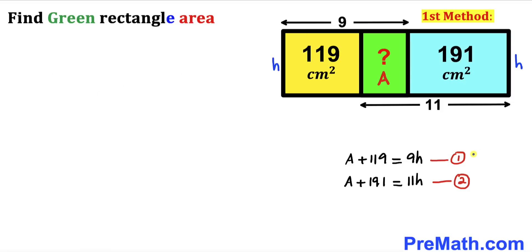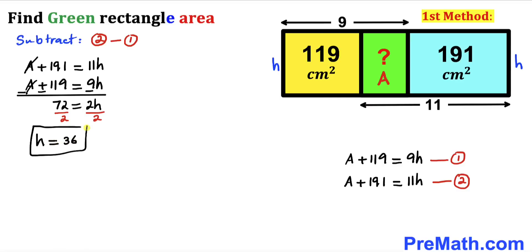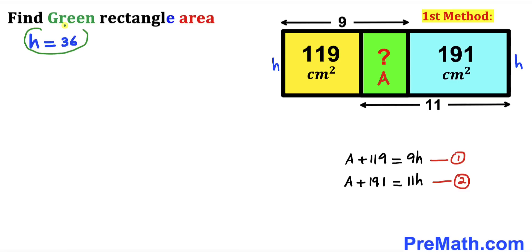We now have two equations. We are going to subtract equation one from equation two. Subtracting the left-hand sides and right-hand sides, the 'a' terms cancel. On the left we get 72, and on the right we get 2h. So 72 = 2h. Dividing both sides by 2, our height h turns out to be 36.